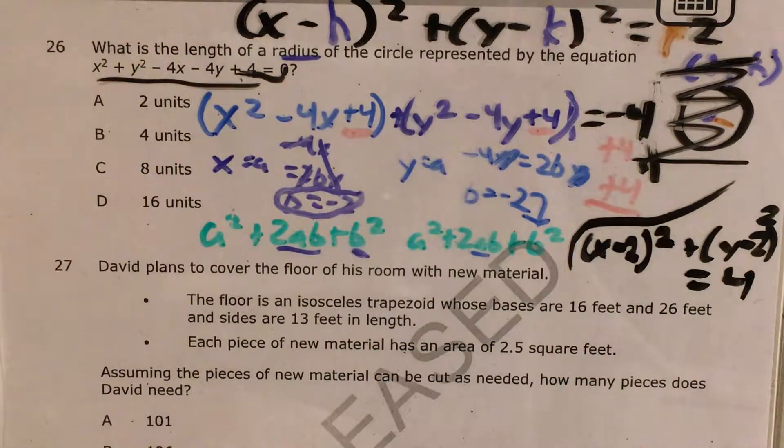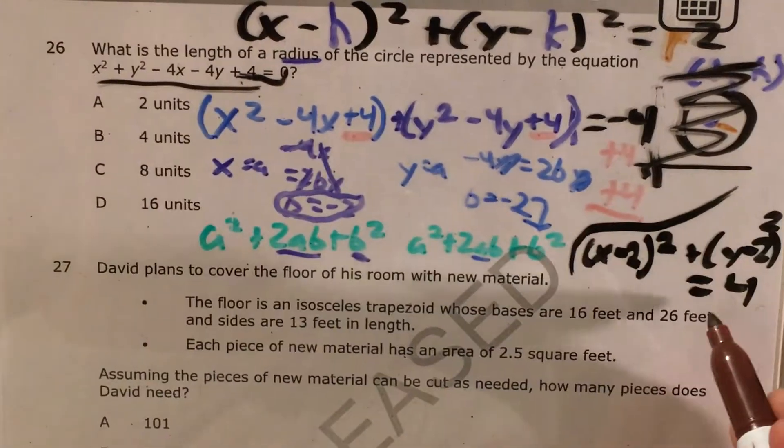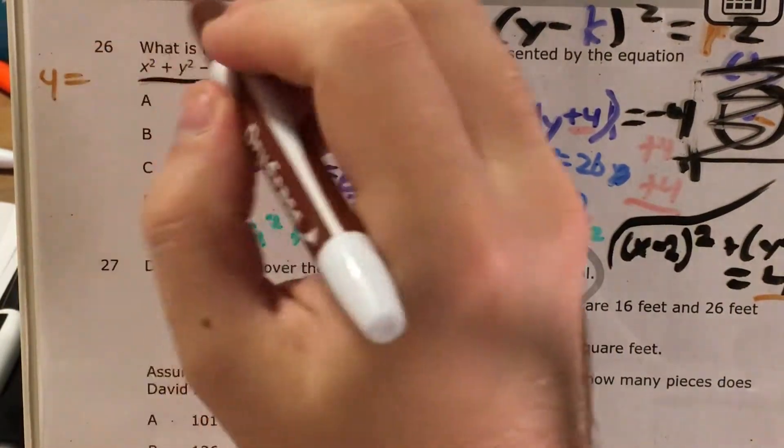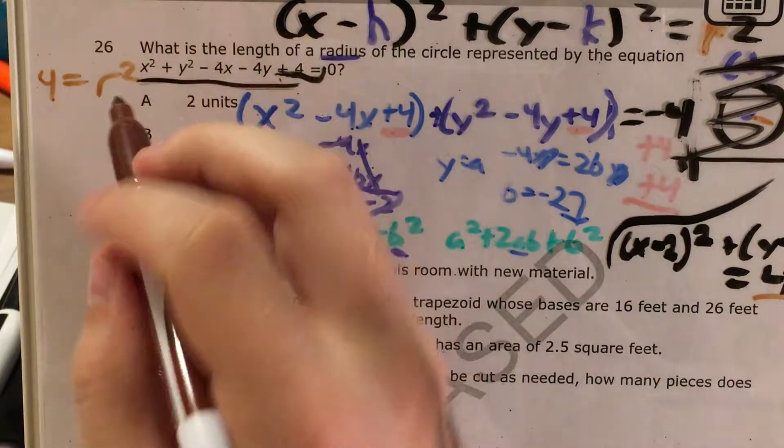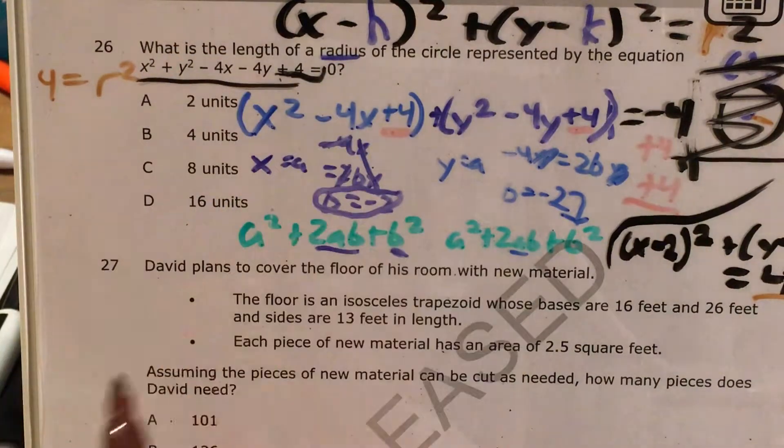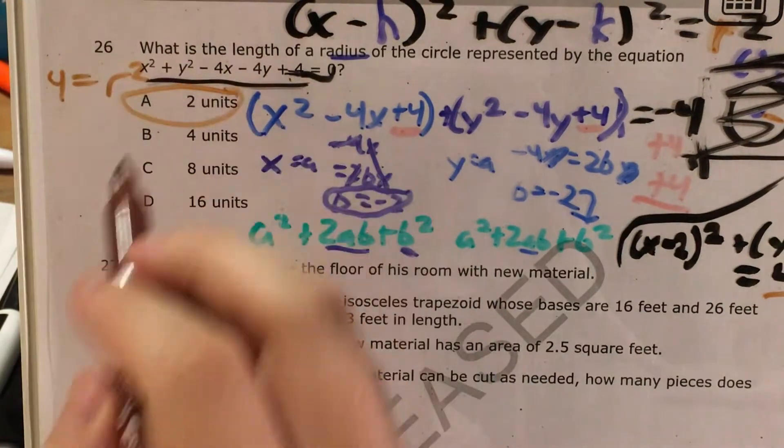And at this point, I only need to do one more math thing, and that's to remind myself that this number here on the end is r squared. So if I know that 4 equals some number r squared, all I have to do is take the square root of 4 to get my answer, which is 2 units. So my answer is a.